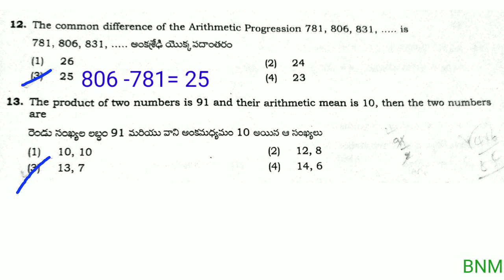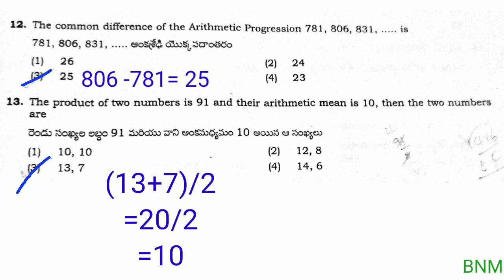Next: the product of two numbers is 91 and their arithmetic mean is 10. Find the two numbers.